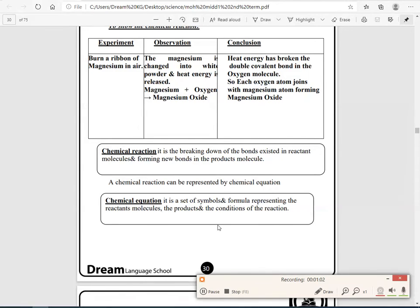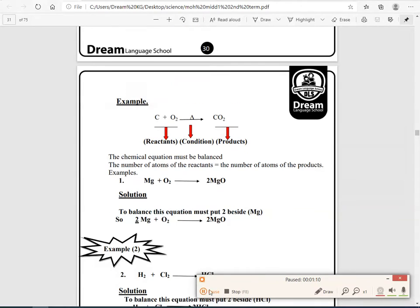What's meant by chemical equation? It's a set of symbols and formulas representing the reactant molecules, the products, and conditions of the reaction. So, here we have an example: if we add carbon plus oxygen, by heating, we will get carbon dioxide.